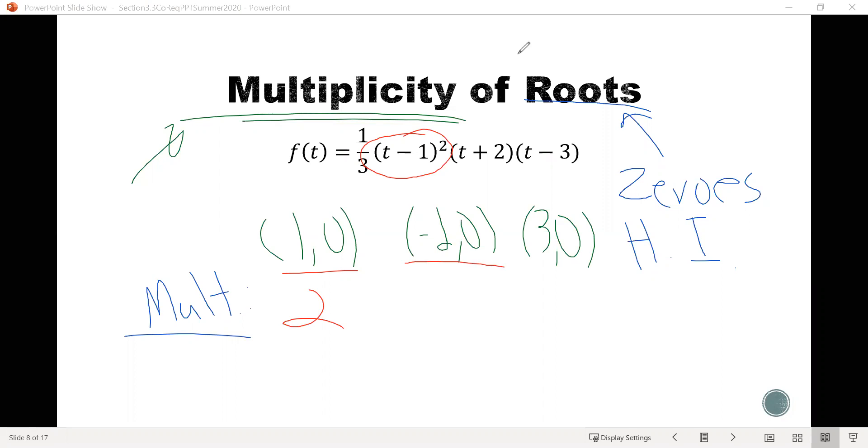Next one for the negative 2, 0. Well, that comes from the term here, the factor of the t plus 2. And notice it doesn't seem to be raised to a power, right? We just have t plus 2 in parentheses. But even though there's no power there, we can imagine that there's an imaginary 1 there, which means that the multiplicity of that negative 2, 0 is 1.